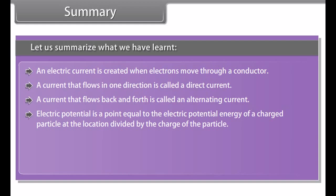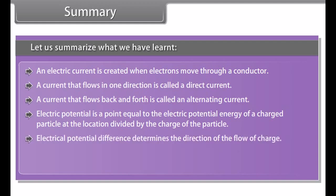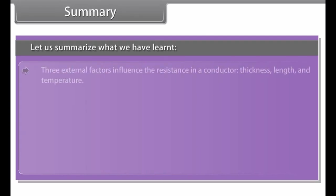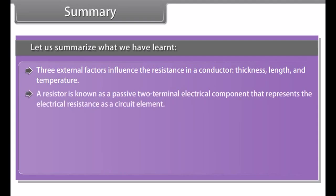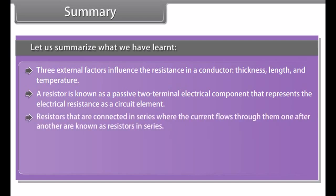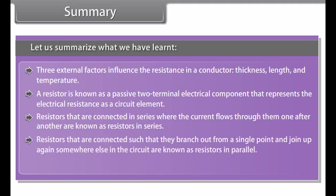Electric power is the rate at which electric charge is transferred by an electric circuit. The SI unit of electric power is the Watt (W), defined as the power consumed by a device carrying 1A of current at a potential difference of 1V. Since the Watt is a very small unit, in practice a much larger unit — the kilowatt — is used, equal to 1000 watts. The unit of electric energy is the Watt-hour (Wh), as electrical energy is the product of power and time.